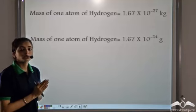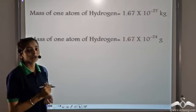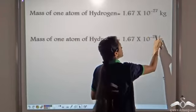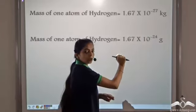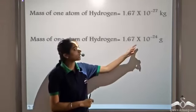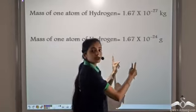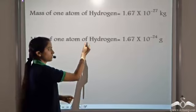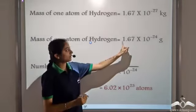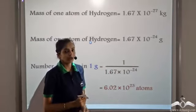We know the mass of one atom of hydrogen is 1.67 × 10⁻²⁷ kg. When we convert this kg into grams, we multiply by 1000, so we get the mass of one hydrogen atom equal to 1.67 × 10⁻²⁴ grams. This amount contains one atom of hydrogen, so the number of hydrogen atoms in one gram is 1 divided by this number, giving us 6.02 × 10²³ atoms.